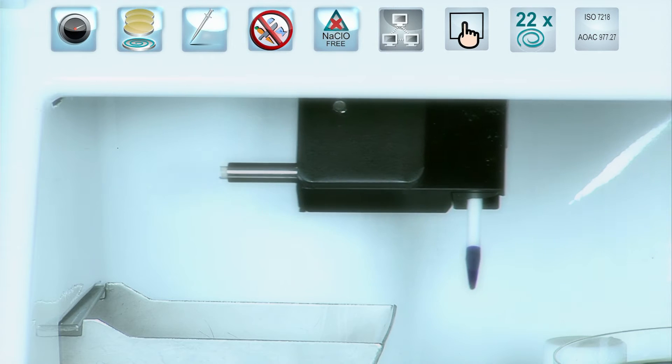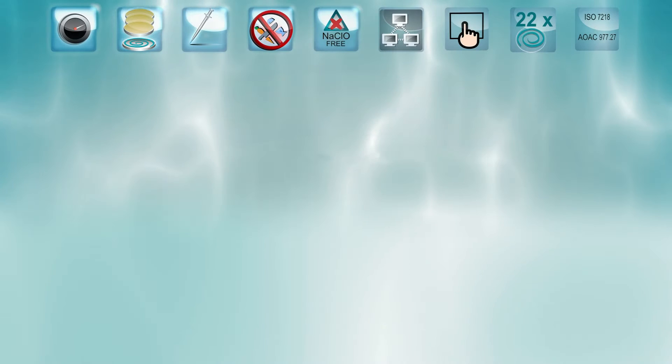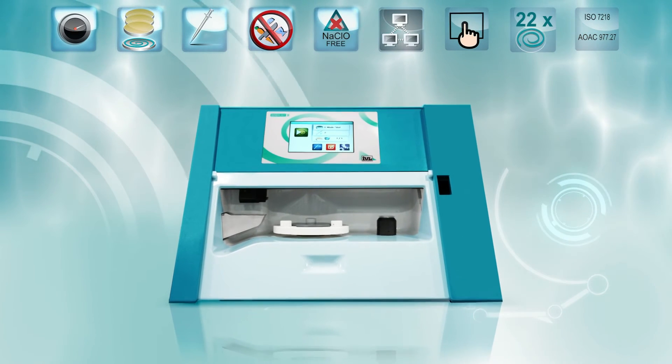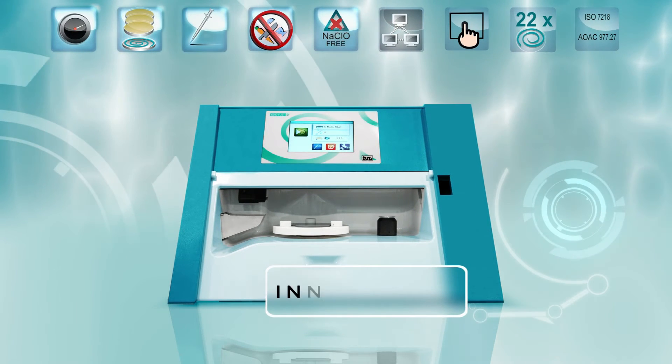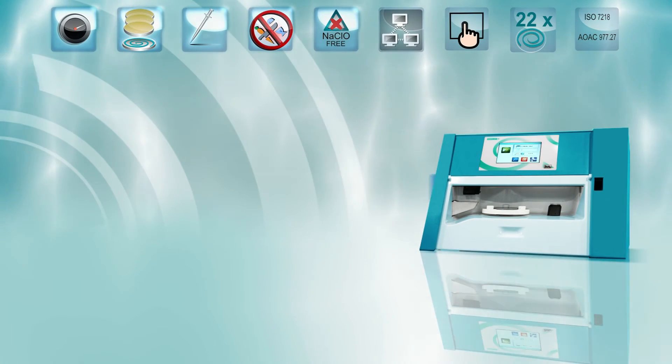After each sample is processed, used micro-syringes are released. EDIJA II is an unmatched spiral plater that pushes the outstanding standards of the first EDIJA even further by adding trendsetting innovations to spiral plating.